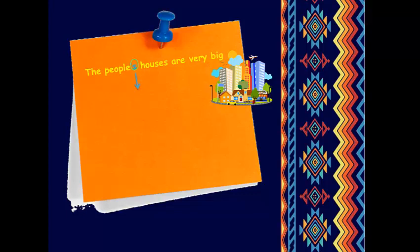So, look at the sentence here, the people's houses are very big. Notice, people is a plural, but it doesn't end with S, like most other plural words. So, we can't just add an apostrophe at the end of this word, so we put apostrophe S.